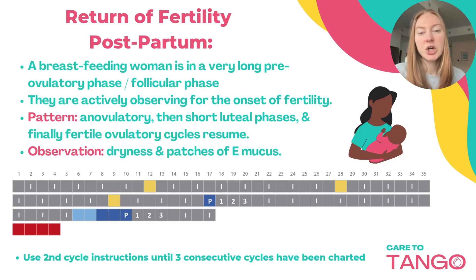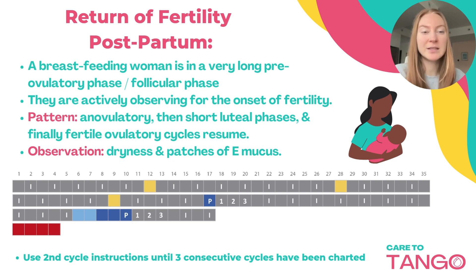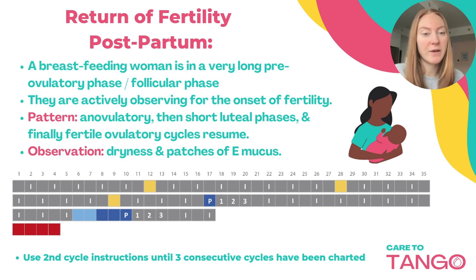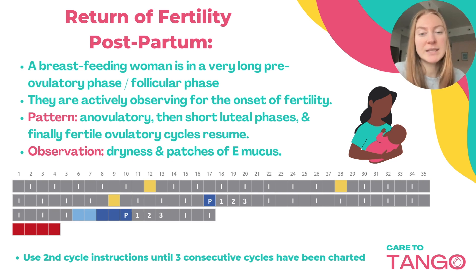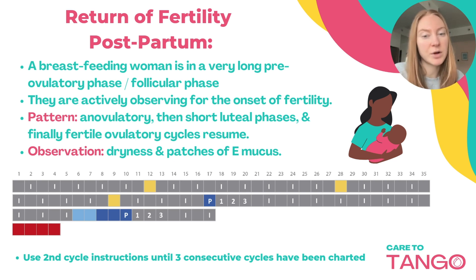The return to your fertility postpartum is going to look different per person and really depends on your breastfeeding pattern. A breastfeeding woman is in a very long pre-ovulatory phase, also known as your follicular phase, and they're actively observing for the onset of fertility. The pattern you might be seeing is an anovulatory pattern, you might have a short luteal phase, and then finally the return of your fertile ovulatory pattern as your cycles resume.